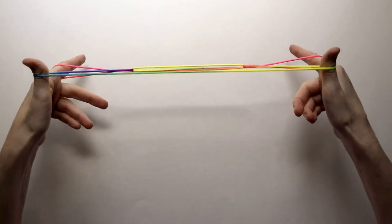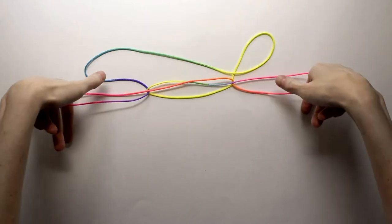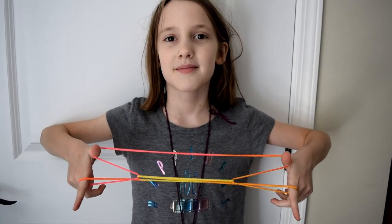Now once you make your cup and saucer, you can then turn it into the witch's hat and Eiffel Tower. My assistant Annabelle will show you how.